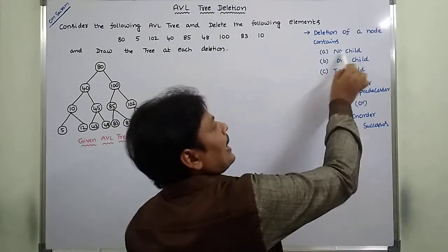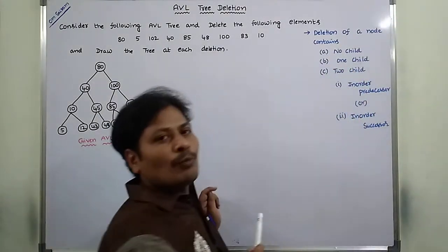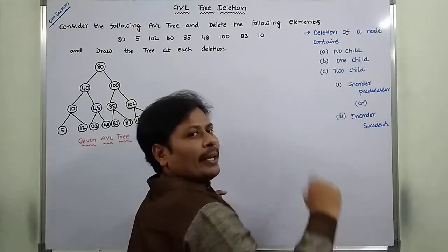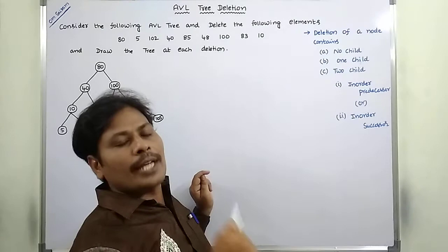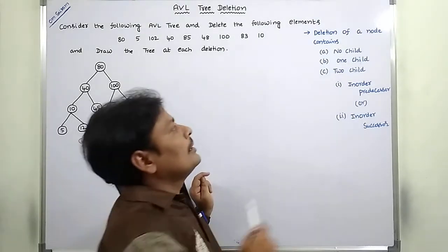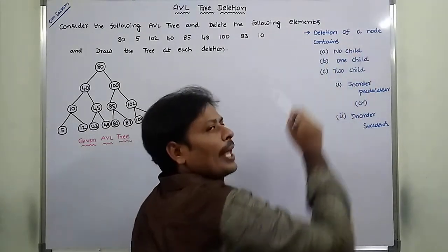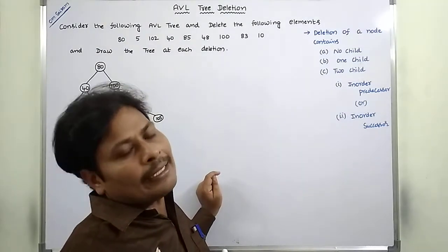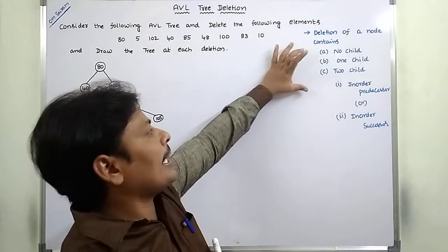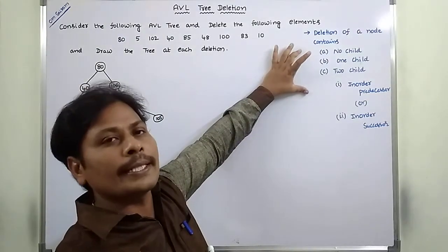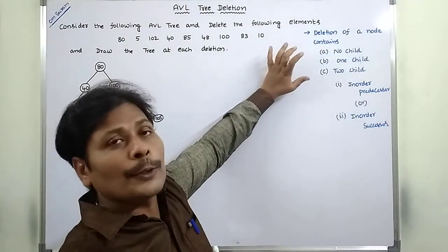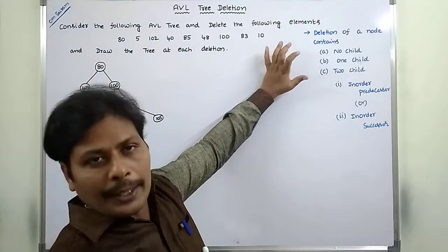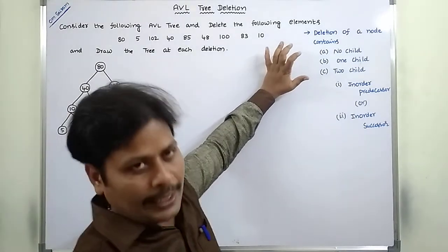In the case where the deleted node has one child, that node can be replaced with either its left child or right child. If the deleted node has no child, we simply delete that node. These are the three cases we have to consider when performing a deletion operation on a node in the AVL tree.